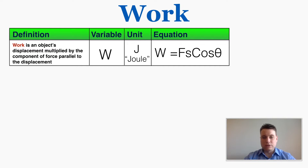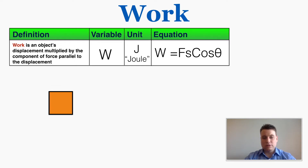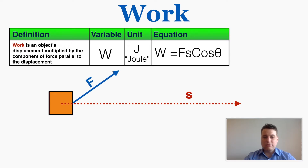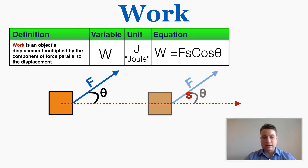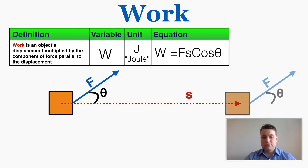I'll explain why that equation looks the way it does using this picture. Let's say that you want to push this box along this displacement s, and to do that you apply this force in an upward and rightward direction. We can imagine maybe this is a rope dragging the box along, and there's a certain angle between the force and the displacement that you're moving the box.